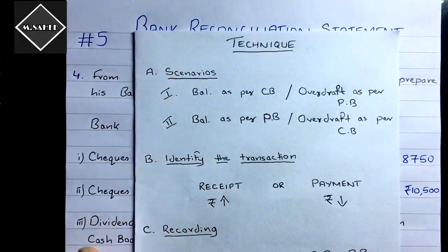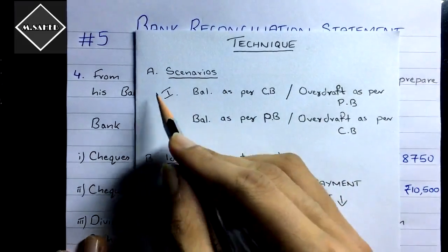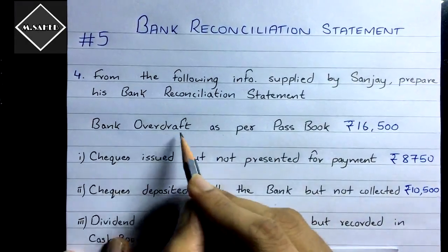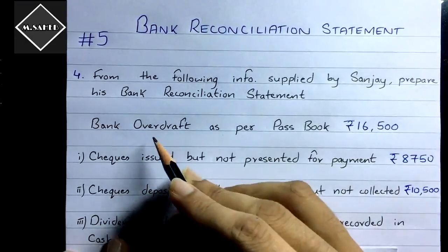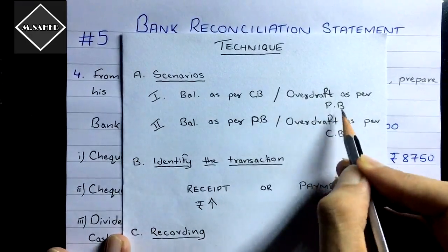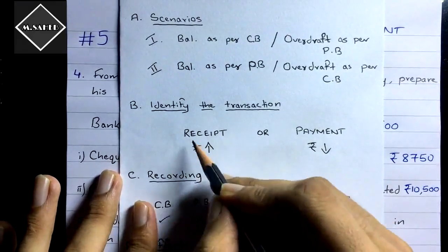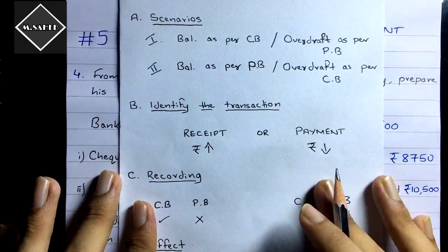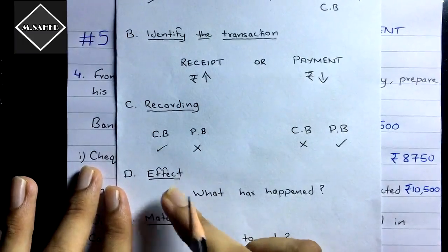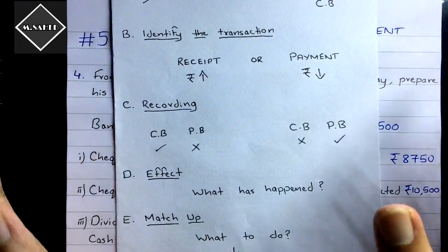The technique we use in solving problems: the first thing we do is identify the scenario — either the first scenario or the second scenario. This problem is based on the first scenario because we have overdraft as per passbook, which is a negative balance. Then you need to identify the transaction — whether it is a receipt transaction or a payment transaction — and see how that transaction is recorded and what effect it has on the bank balance according to the cashbook and the passbook.